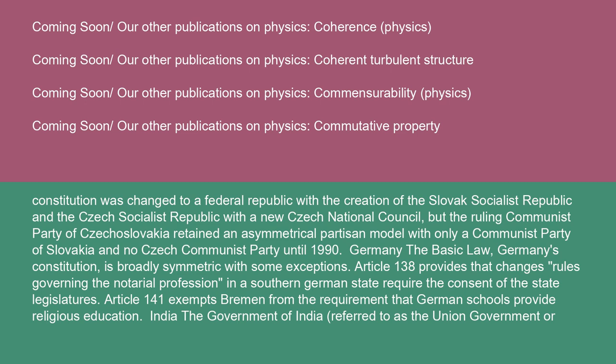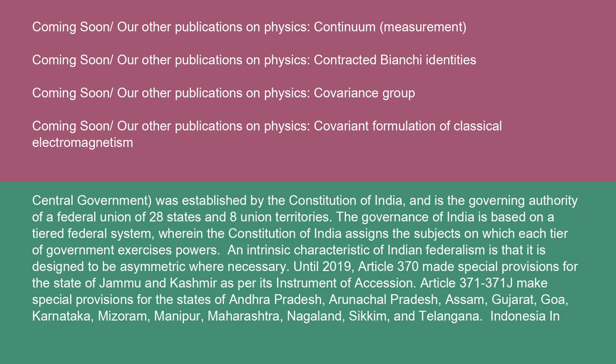India: the government of India, referred to as the union government or central government, was established by the Constitution of India and is the governing authority of a federal union of 28 states and eight union territories. The governance of India is based on a tiered federal system, wherein the constitution assigns the subjects on which each tier of government exercises powers. An intrinsic characteristic of Indian federalism is that it is designed to be asymmetric where necessary. Until 2019, Article 370 made special provisions for the state of Jammu and Kashmir as per its instrument of accession.